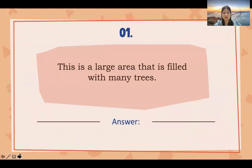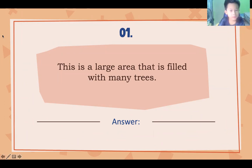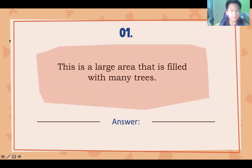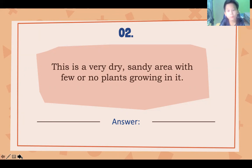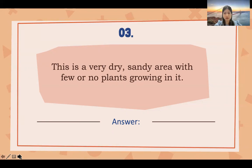Okay, now let's read the definition and tell me the answer. Number one: this is a large area that is filled with many trees. Answer: a forest. Next one, number two: this is a very dry, sandy area with few or no plants growing in it. Answer: desert.